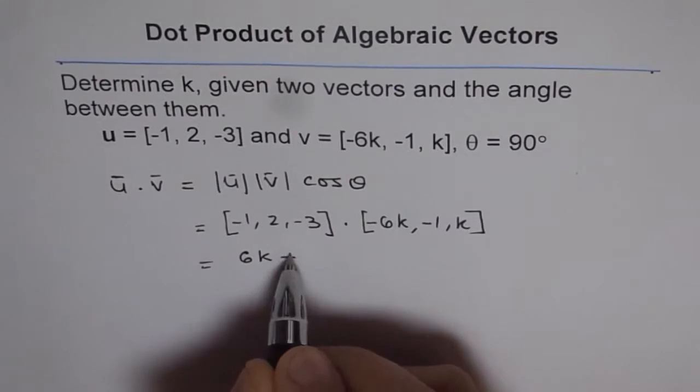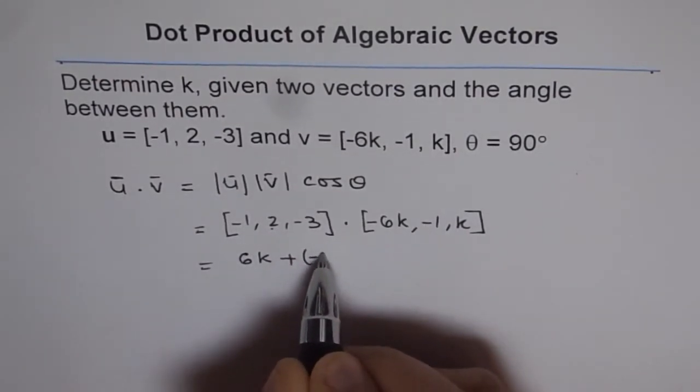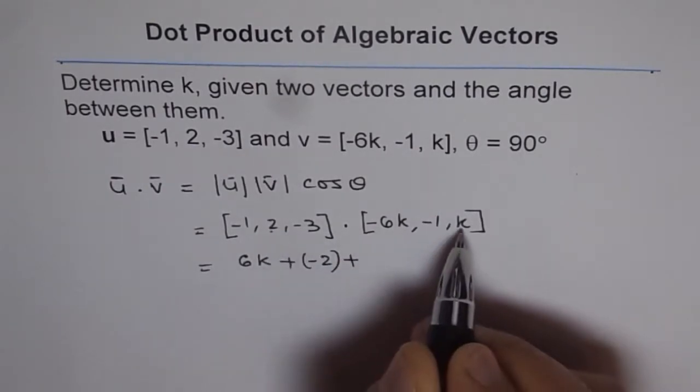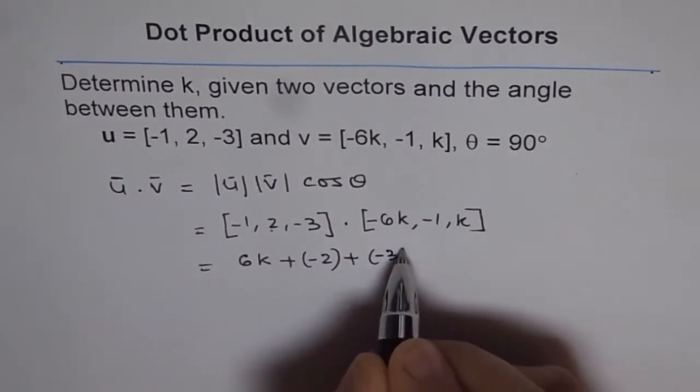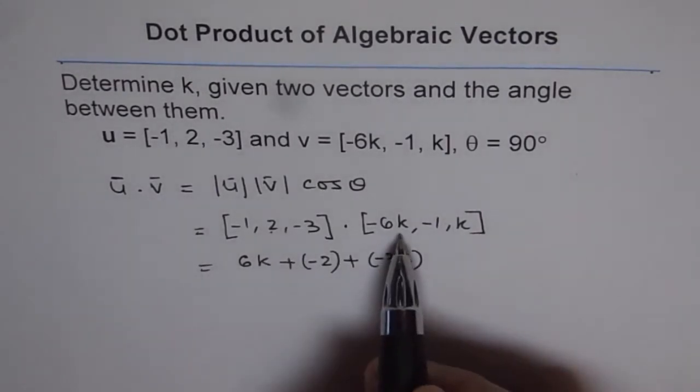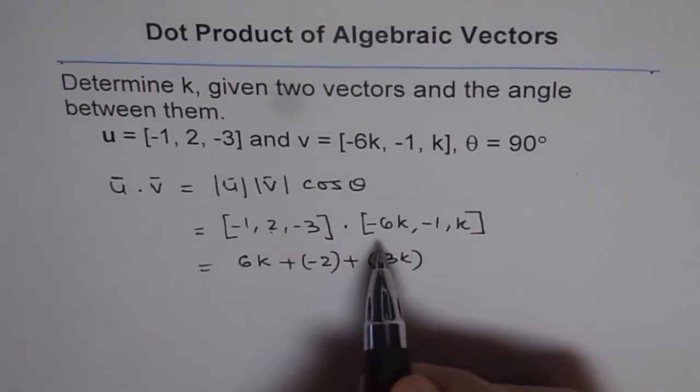plus (2)(-1) = -2, plus (-3)(k) = -3k. That is the dot product using algebraic vectors.